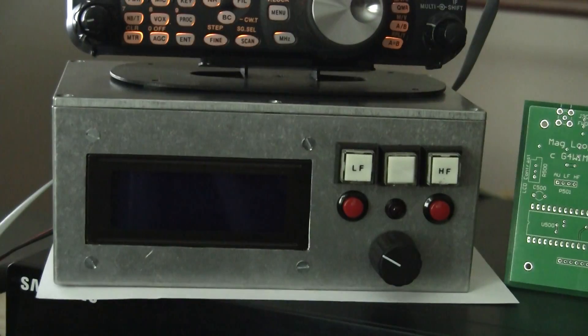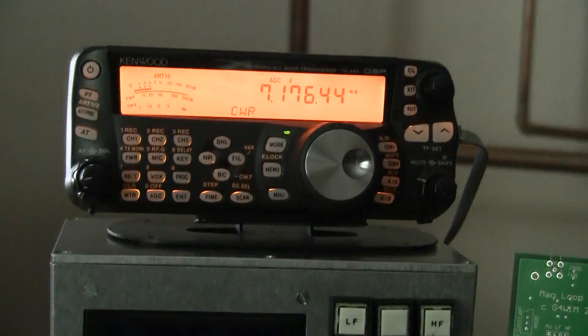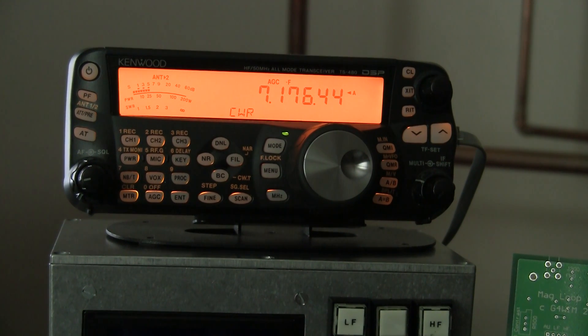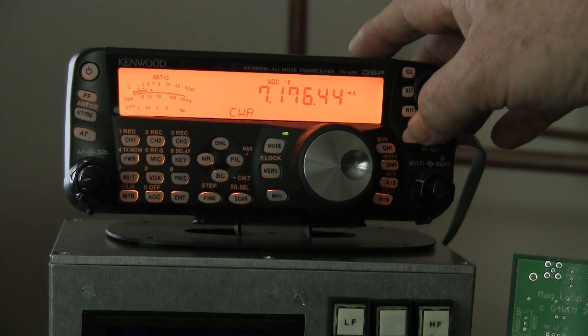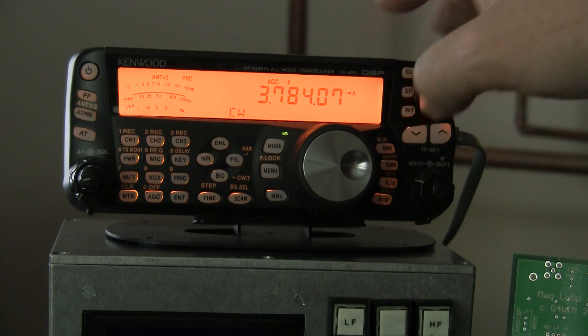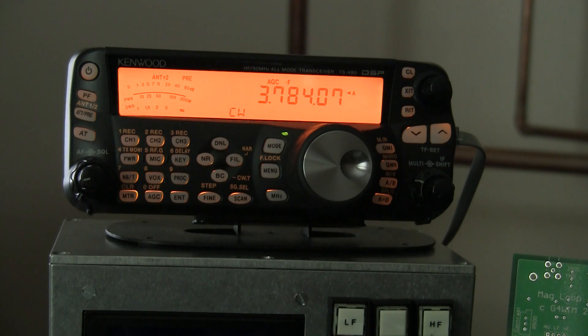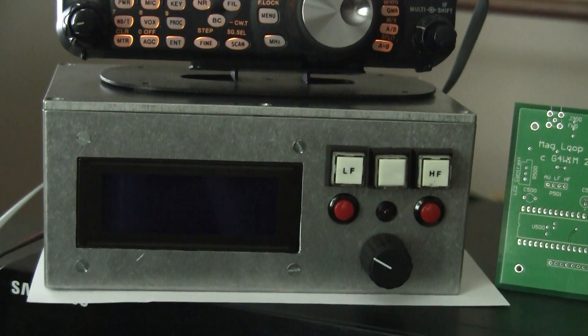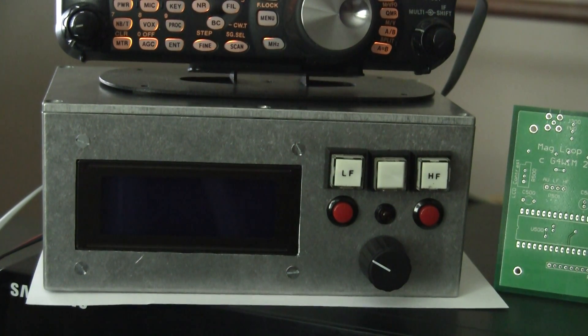So we'll just do a quick demonstration here. At the top we've got a Kenwood TS-480 and we'll just set it down to the lowest frequency we want to work on, 3.784 megahertz, and at the moment the control box is turned off. I'll power that in just a second.